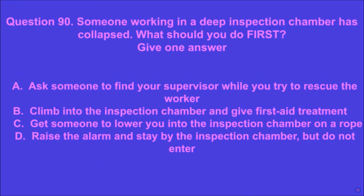Question 90: Someone working in a deep inspection chamber has collapsed. What should you do first? Give one answer. A: ask someone to find your supervisor while you try to rescue the worker, B: climb into the inspection chamber and give first aid treatment, C: get someone to lower you into the inspection chamber on a rope, D: raise the alarm and stay by the inspection chamber but do not enter. D is the correct answer.